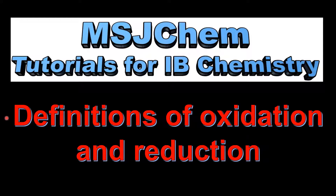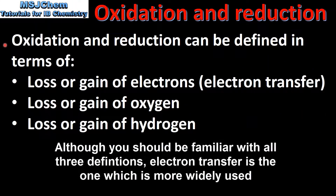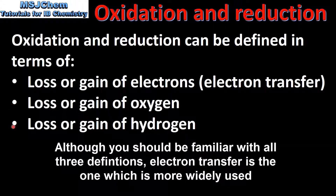This is MSJChem. In this video I'll be looking at the definitions of oxidation and reduction. Oxidation and reduction can be defined in terms of loss or gain of electrons, which is electron transfer, loss or gain of oxygen, and loss or gain of hydrogen.